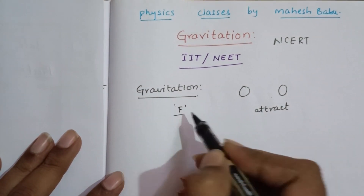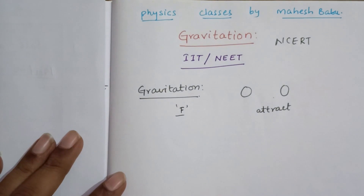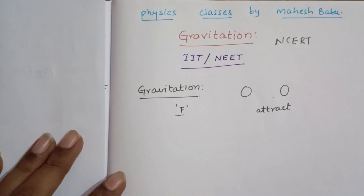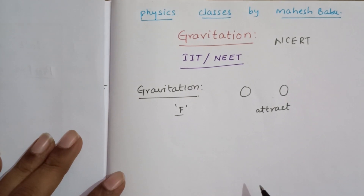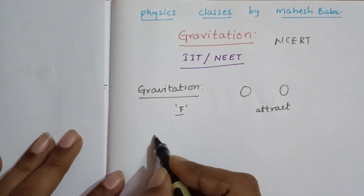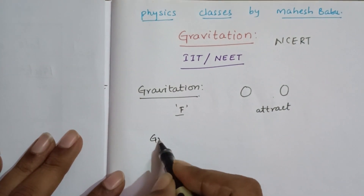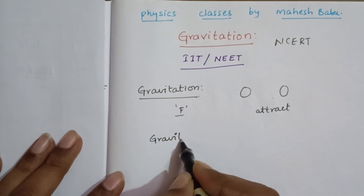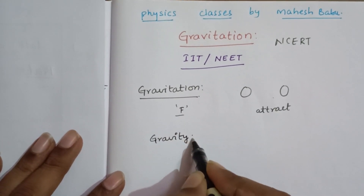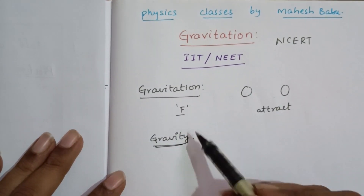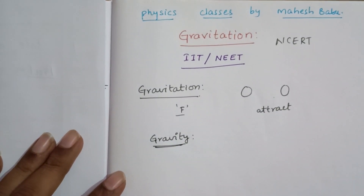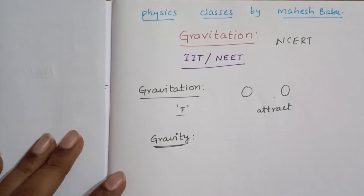Gravitational force is denoted by the letter F. Now, generally we will hear the word gravity. What is the difference between gravitation and gravity?